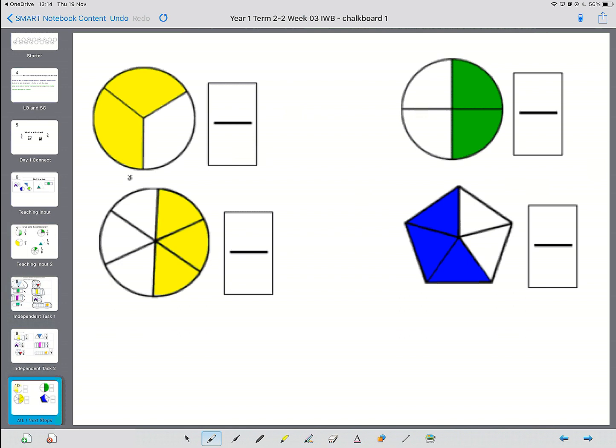So, welcome back to the last part of the lesson. The first one, there are two parts colored. And there are one, two, three parts altogether.